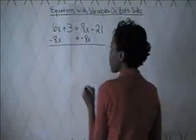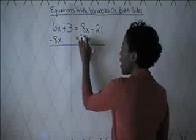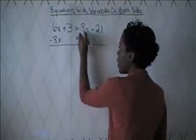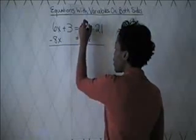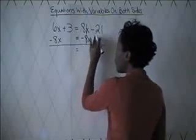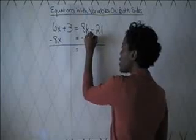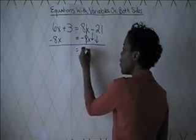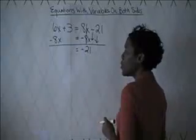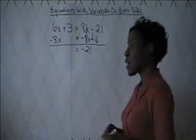And notice when I evaluate on the right side of the equation here, 8x minus 8x is just 0. So I'm left with on the right hand side with a negative 21. Notice I'm bringing down the sign and the number. It's very important to do that. Don't drop off signs.